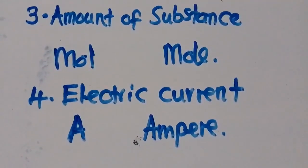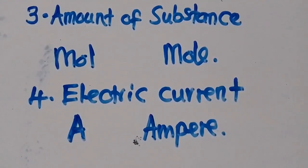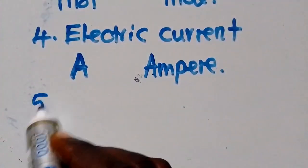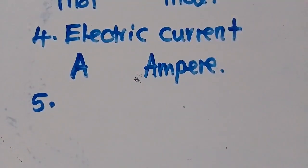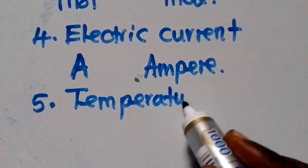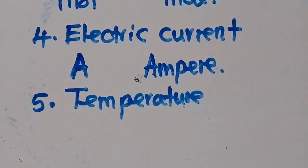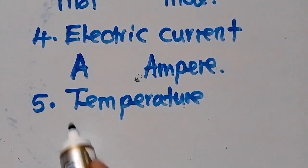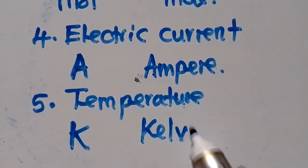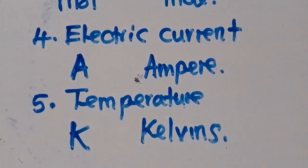Make sure you understand them clearly because this is a foundation that will really help you in physics. If you don't know this, you cannot answer any question in physics. Number five is called temperature. Temperature is measured in Kelvins — capital letter K. In words, this is Kelvins. This is how you need to write it.